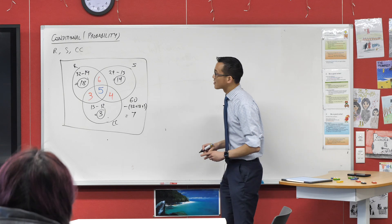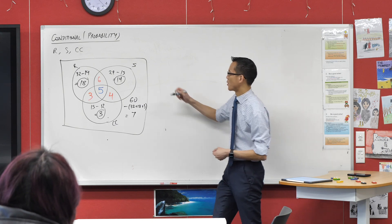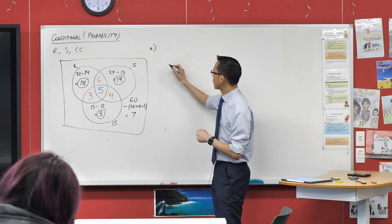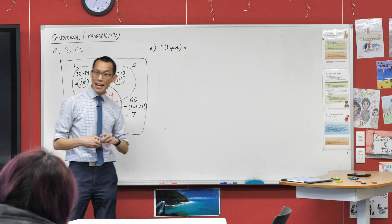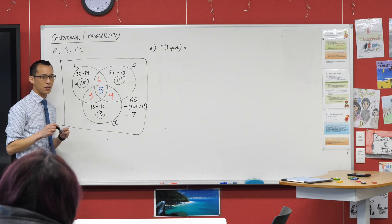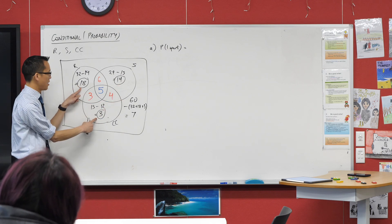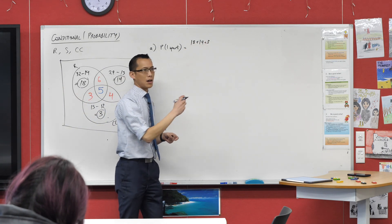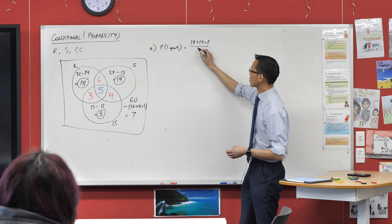From here, that's all the hard work done. Part A asks for the probability of a random student trying out for one sport. The students who only tried one sport are in the exclusive regions: 18, 14, and 3 — those are my favourable outcomes. Since I'm selecting from all students at random, I divide by 60.